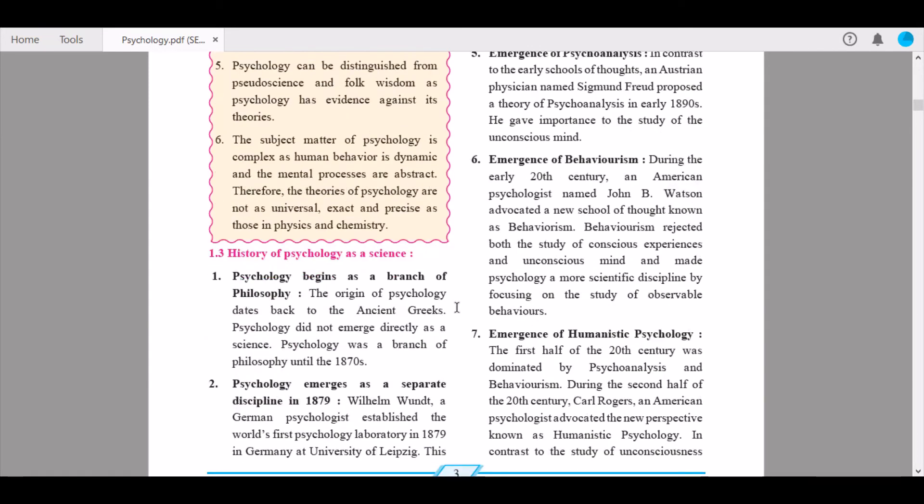Next we continue to 1.3, History of Psychology as a Science. First, psychology begins as a branch of philosophy. The origin of psychology dates back to the ancient Greeks. Psychology did not emerge directly as a science. Psychology was a branch of philosophy until the 1870s.